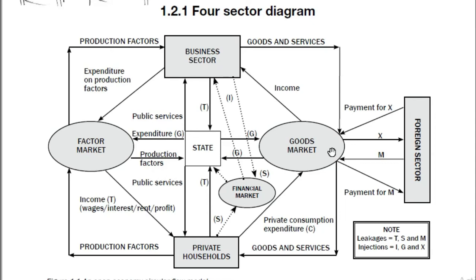Imports coming to the goods market can be seen as expenditure by individual households, businesses, and the public sector, because when goods get to the goods market, households, governments, and businesses can access them. There is also a flow of goods and services to the foreign sector from businesses — goods can be exported to the foreign sector. Businesses receive money as payment for exports, and when we import, we pay money as payment for imports.